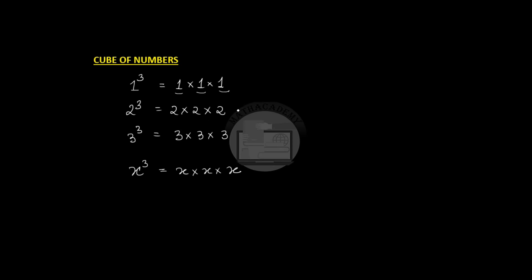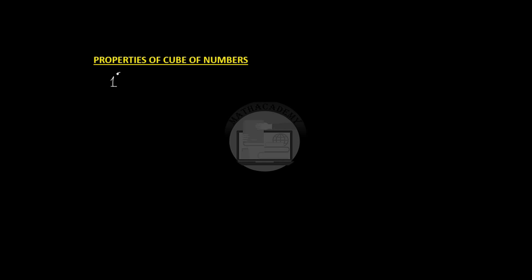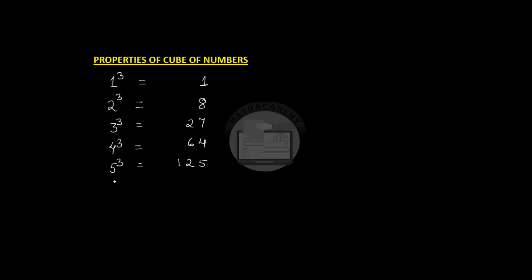Now let us look at some of the properties of cube numbers. Let us find out the cube of one: one times one times one, which is one. Cube of two: two times two times two, that's eight. Cube of three: three times three times three is twenty-seven. Cube of four is sixty-four. Cube of five is one hundred twenty-five, and so on.